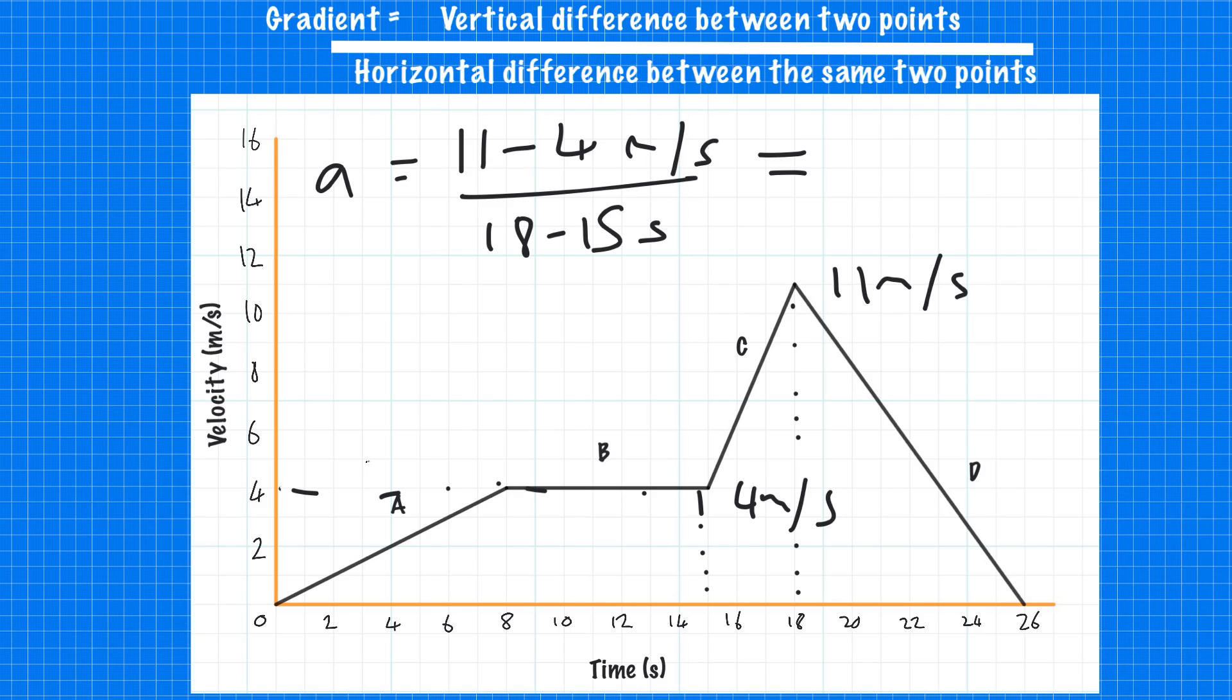And then we can use that and it's seven divided by three, which gives us an acceleration of 2.3 metres per second squared. So we can see the steeper line shows a much greater acceleration than before. So before we had 0.5 metres per second squared and now we've got 2.3 metres per second squared.